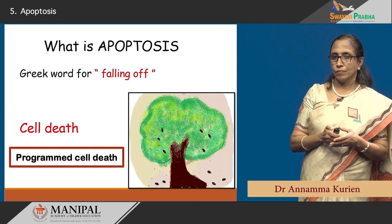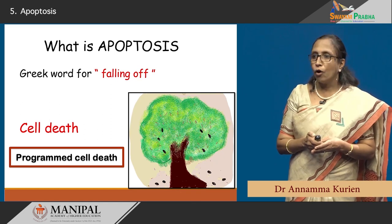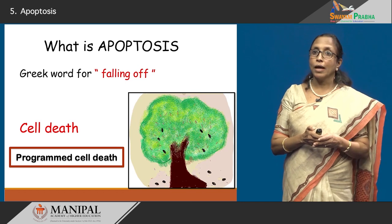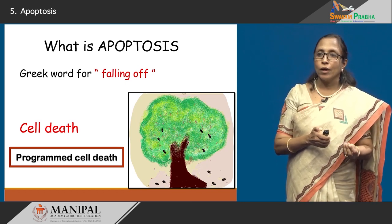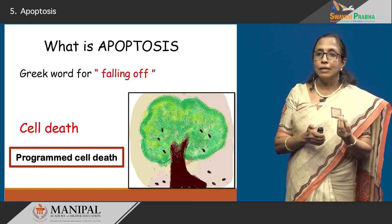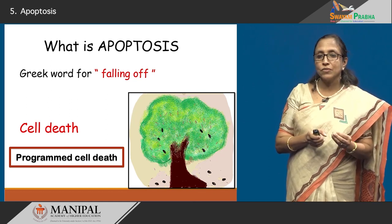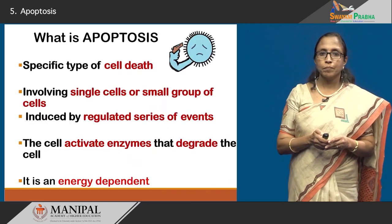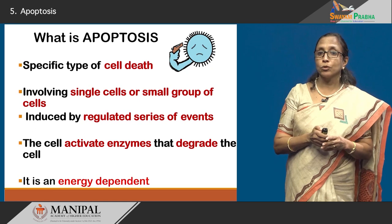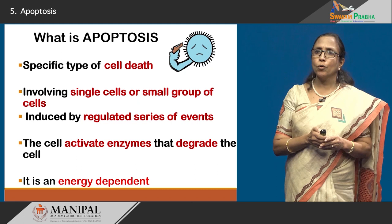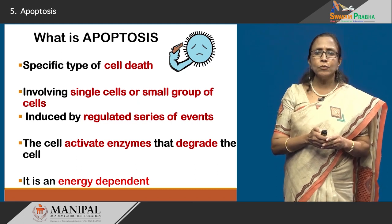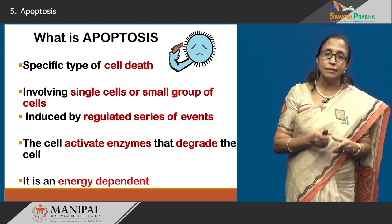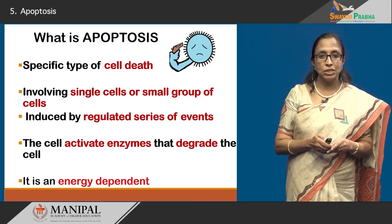Now what is hepatosis? In Greek the word means falling off or dropping off. It is pronounced hepatosis — it is not apoptosis. It is the falling away or dropping off of either petals or the leaves from a tree, where only some few cells are dropping off. It is a unique form of cell death and we would say that it is programmed cell death. To give the definition: it is a specific type of cell death which involves single cells or small groups of cells, induced by a series of regulated events. The cells require enzymes to be activated that degrade and break up the cell, and it is an energy dependent process.